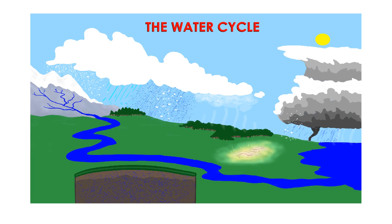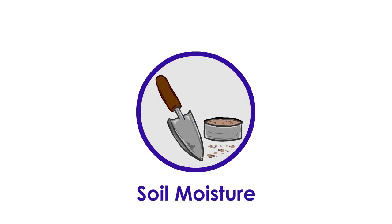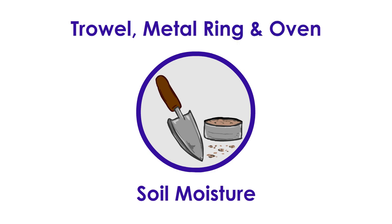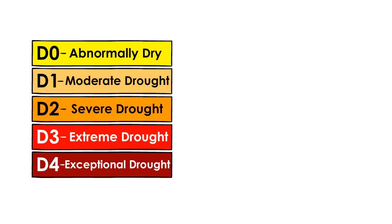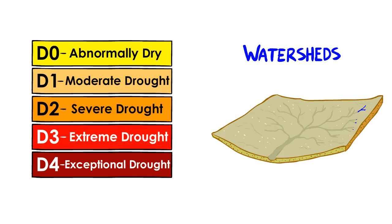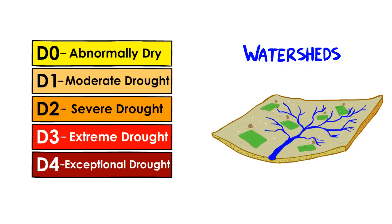Another part of the water cycle is called infiltration, which deals with how water interacts with soils. Here we measure soil moisture with very basic equipment: a trowel, metal ring, and an oven. This is extremely helpful data when assessing the categories of drought and the health of watersheds, and is also valuable for agriculture.